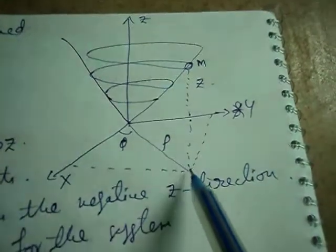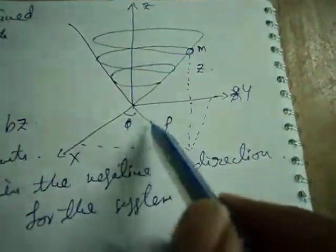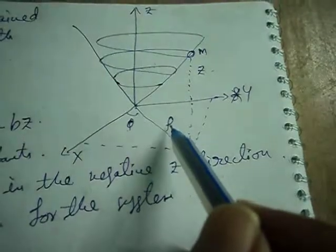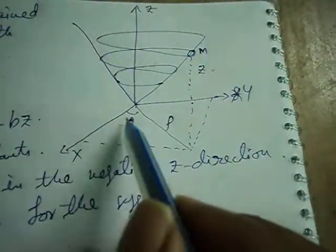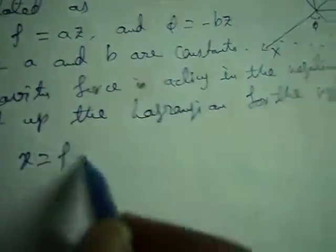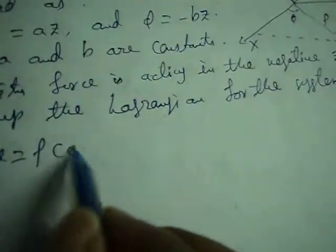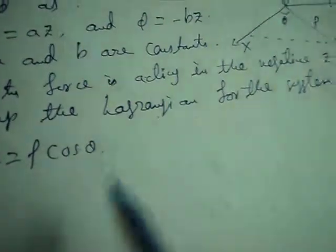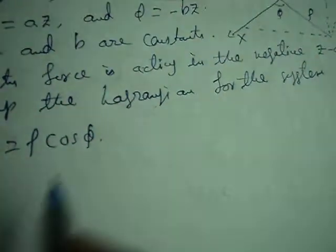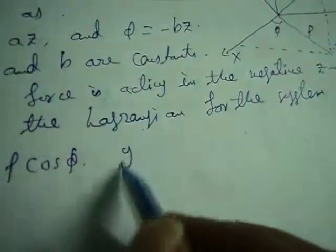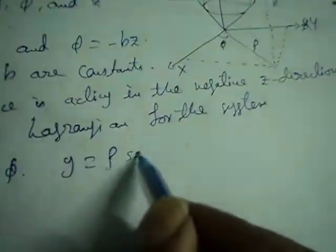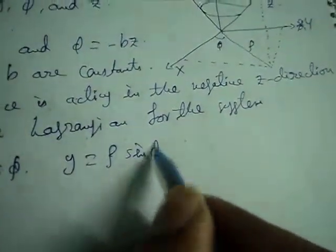The bead of mass m has projection on the xy-plane with radius rho making an angle phi, so we can write x equal to rho cos phi and y equal to rho sin phi.